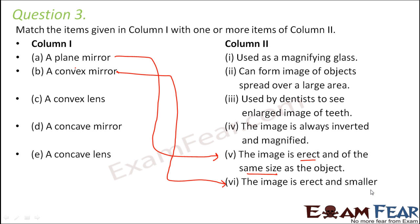But at the same time, it also matches to 2, where it says it can form image of objects spread over a large area. Since it can give diminished images, it can actually show objects which are spread over a larger area in a small area.